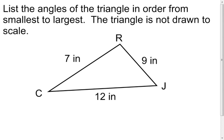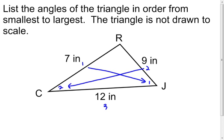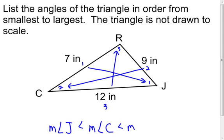This last problem uses a similar concept, but now I want to list the angles in order from smallest to largest. The triangle is not drawn to scale. I identify the smallest, medium, and biggest sides, then go opposite to find the corresponding angles. Writing the inequality: the measure of angle J is less than the measure of angle C, which is less than the measure of angle R. Those are a few examples dealing with inequalities in a triangle. I hope this helps — anytime you have any questions, let me know.